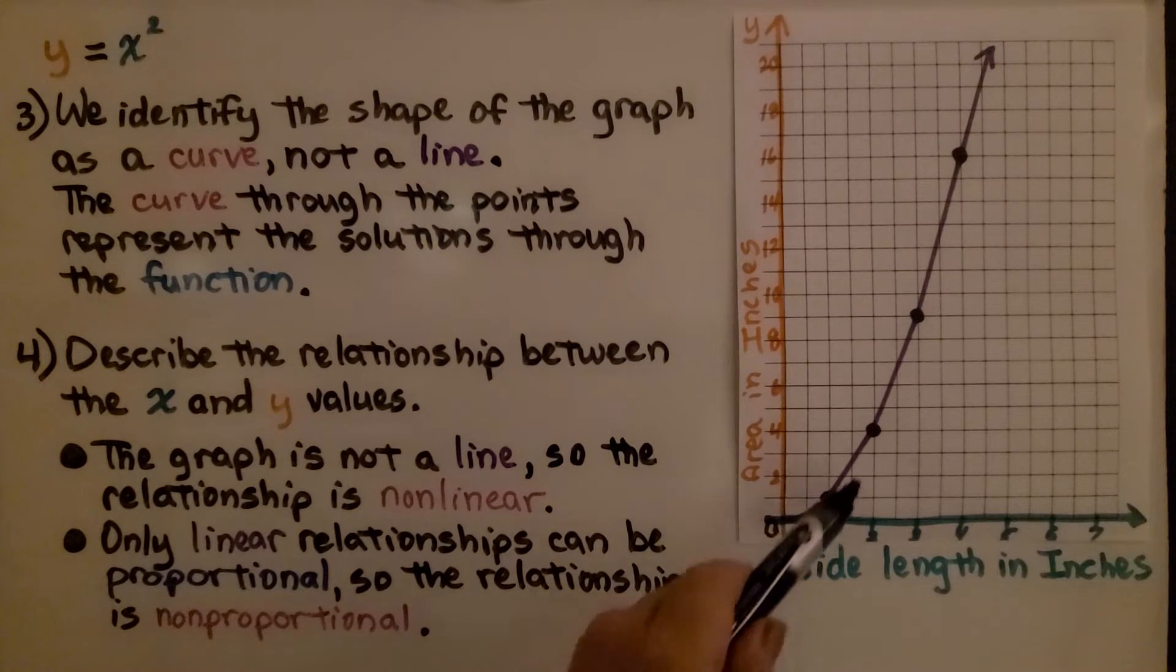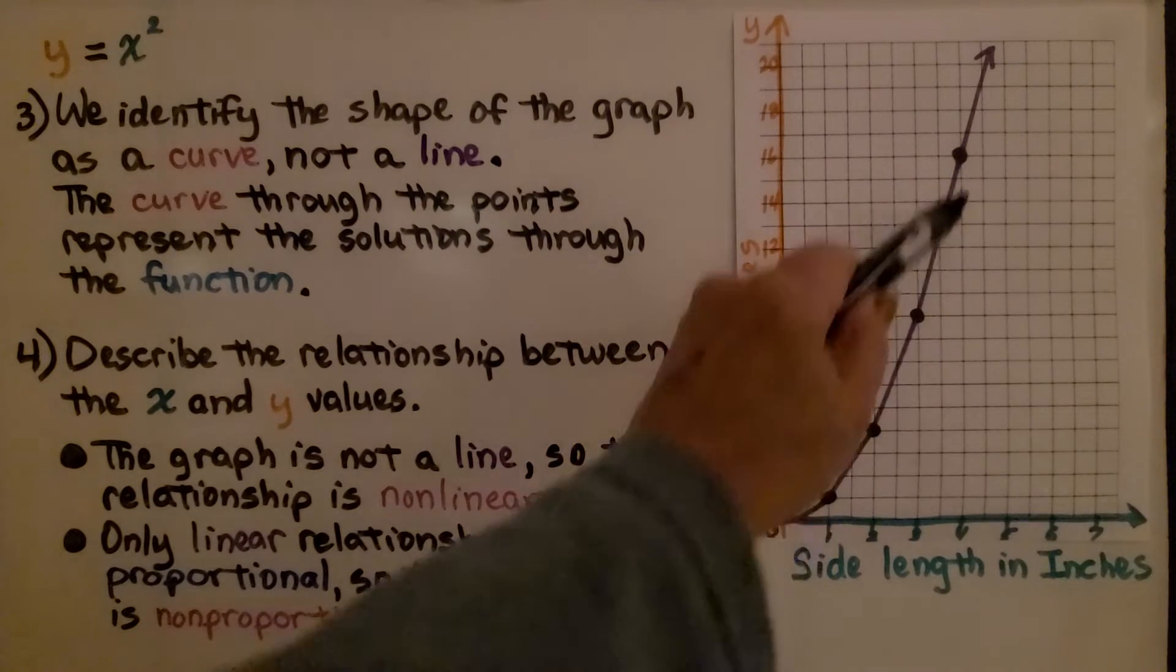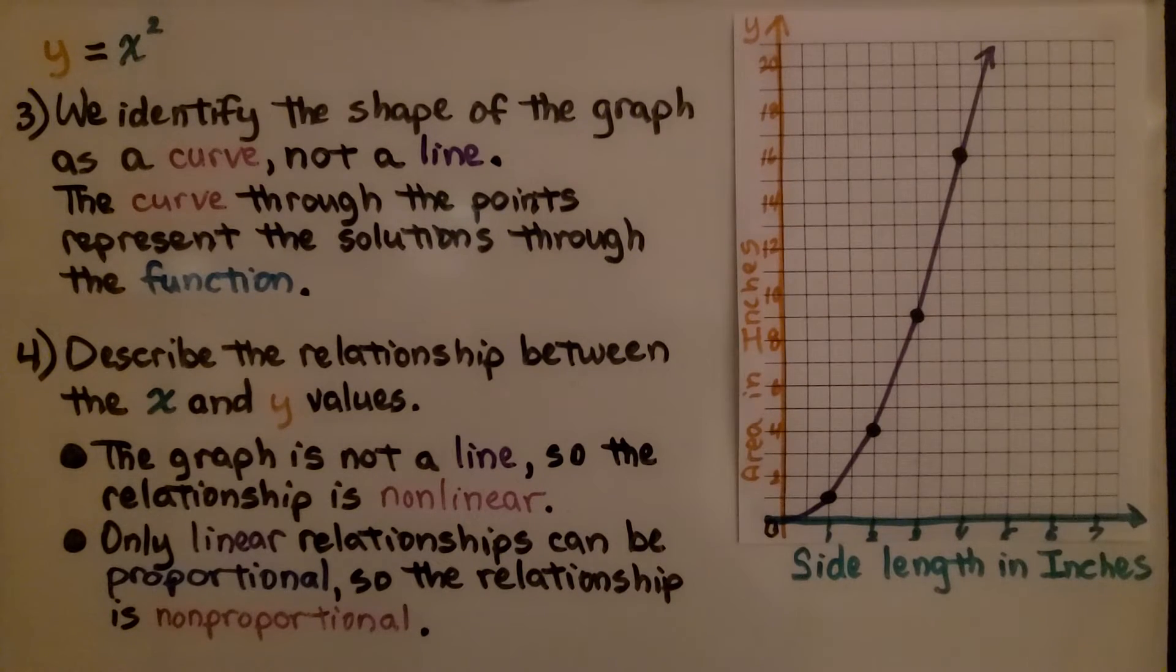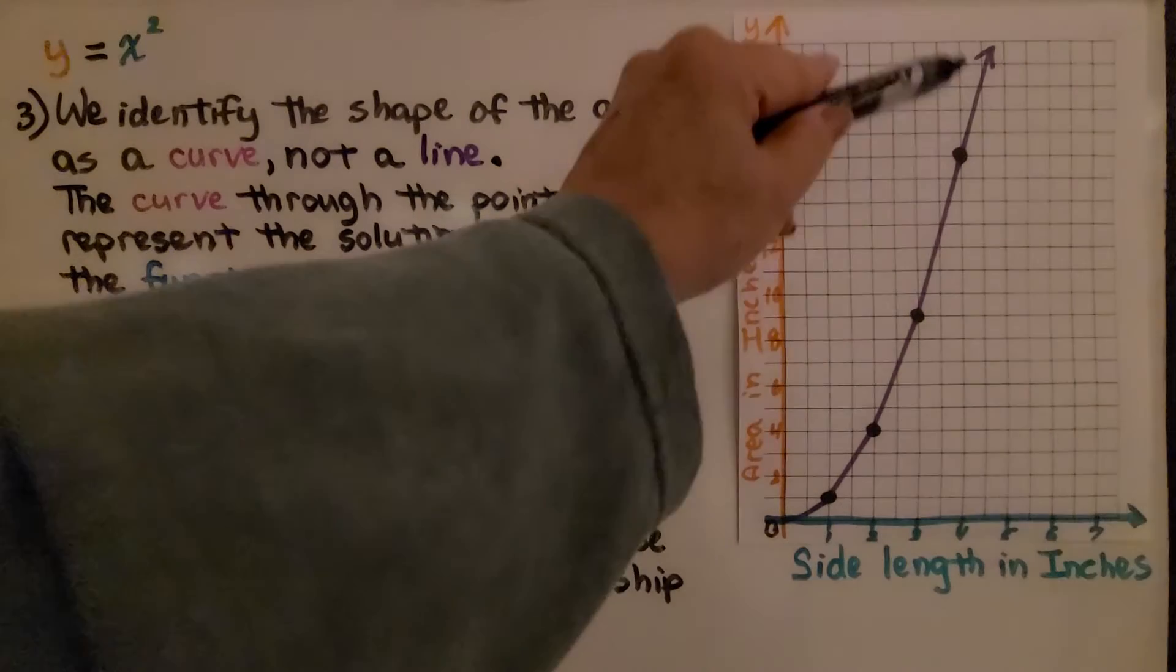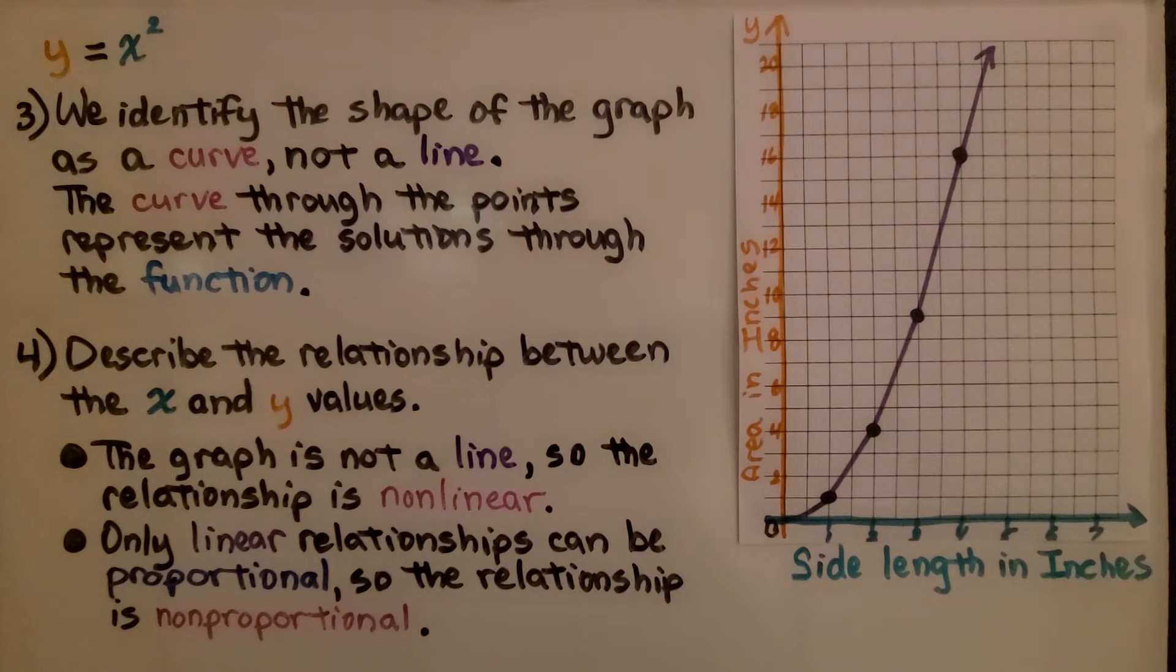I have all the ordered pairs plotted on my coordinate plane. We identify the shape of the graph as a curve. See how it's curving? It's not a line. The definition of a line is straight, going on infinitely. The curve through the points represents the solutions through the function.